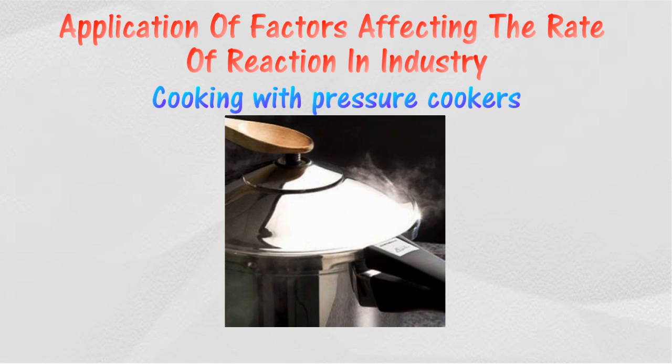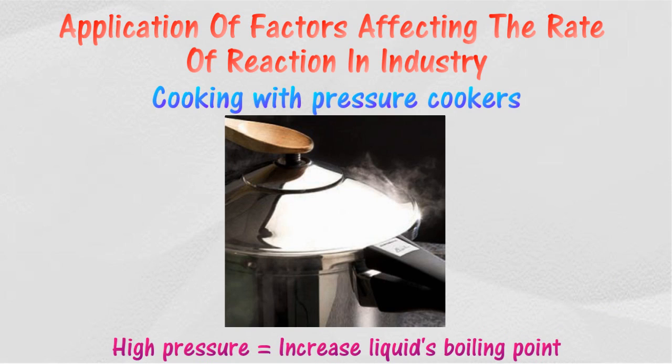High pressures in a pressure cooker will increase the boiling point of water. Water at higher temperatures will increase the rate of reaction, resulting in a faster time of cooking. An optimum temperature or pressure with the use of a catalyst can result in a large product yield in a short period of time.